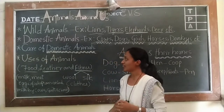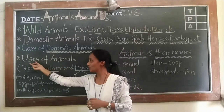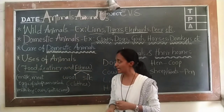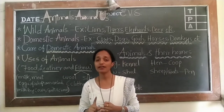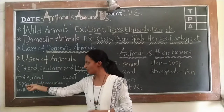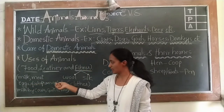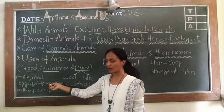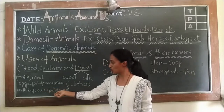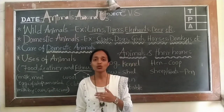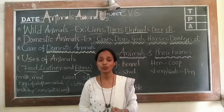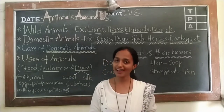Let us know what are the uses of animals. We get food, leather, and fibers from animals. Food like milk, meat, eggs, and fish. Milk is used for many things — it is used to make butter, cheese, yogurt, and ice cream.